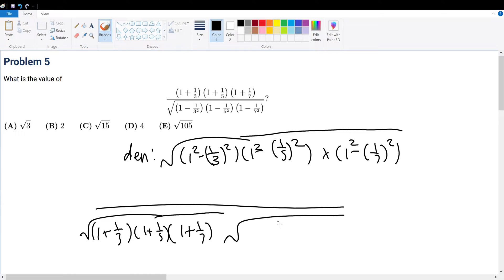Now that's all multiplied by the square root of its conjugate, which is 1 minus 1 over 3, times 1 minus 1 over 5, times 1 minus 1 over 7.